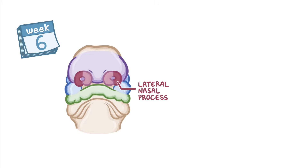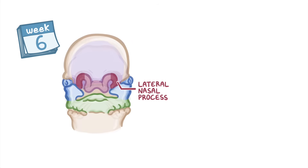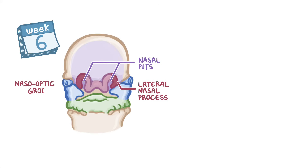As the mesoderm proliferates, the nasal placodes appear to sink downwards to form nasal pits. The base of the nasal pits are lined by the oronasal membrane, which separates them from the primitive oral cavity. At the same time, the maxillary processes start to proliferate towards the center, while remaining separated from the lateral nasal process by the naso-optic groove and the medial nasal process by the buccal nasal groove.